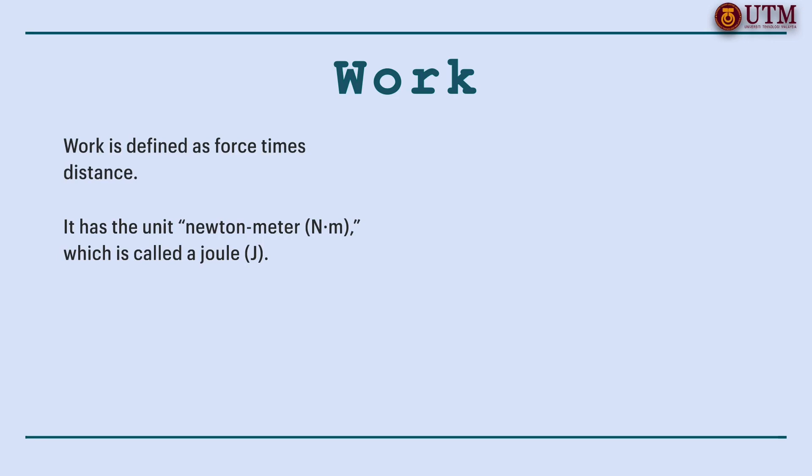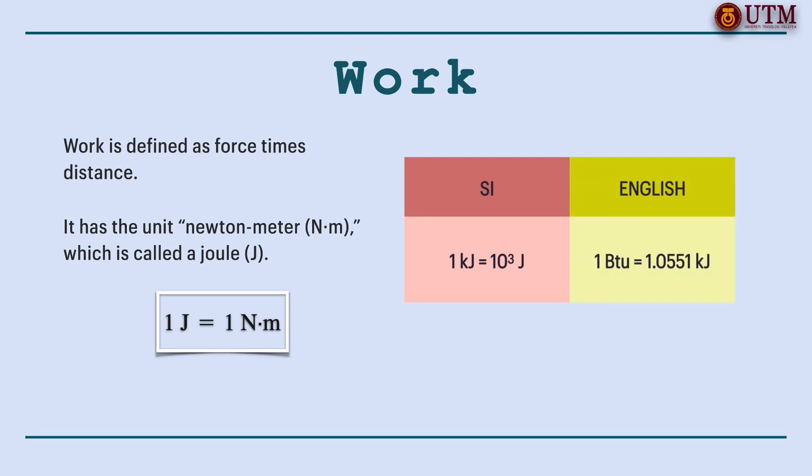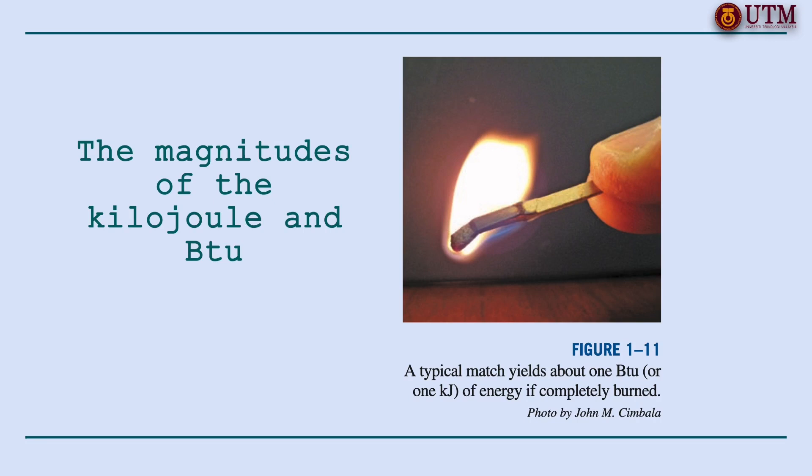Now, let us proceed to our real business to learn about energy. Work which is a form of energy can simply be defined as force times distance. Therefore, it has the unit Newton meter, which is called a joule. A more common unit for energy in SI is the kilojoule, where 1 kilojoule is equal to 10 to the power of 3 joule. In the English system, the energy unit is the British thermal unit, or simply known as BTU, which is defined as the energy required to raise the temperature of 1 pound mass of water at 68 degree Fahrenheit by 1 degree Fahrenheit. The magnitudes of the kilojoule and BTU are almost identical. Here is a good way to get a feel for the magnitudes of these units. If you light a typical match and let it burn itself out, it yields approximately 1 BTU or 1 kilojoule of energy.